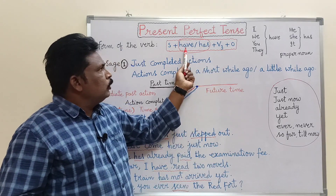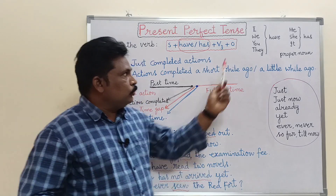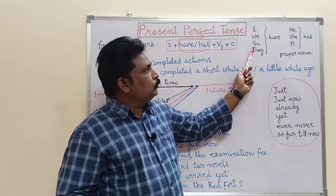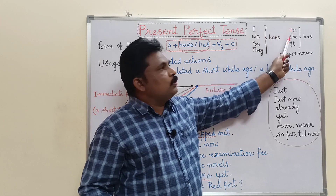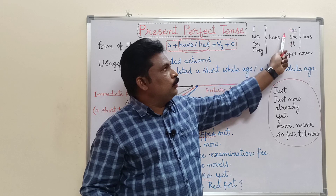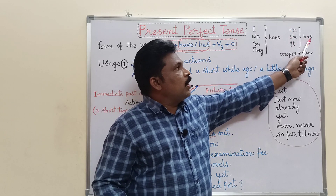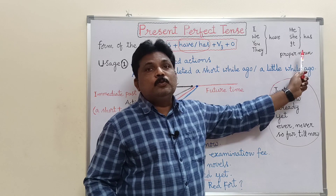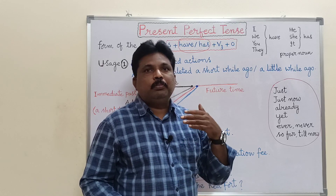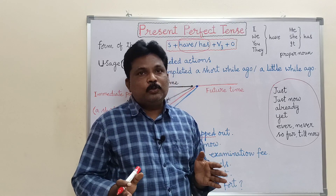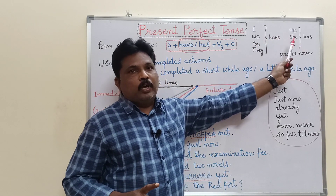With the subjects I, we, you, they — 'have' is used: I have, we have, you have, they have. For third person singulars — he, she, it — 'has' is used. When a proper noun is the subject, 'has' is also used: Raju has, Lakshmi has. But when two proper nouns are joined — Raju and Lakshmi — they are treated as plural, so 'have' is used.